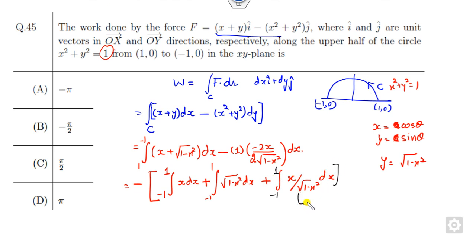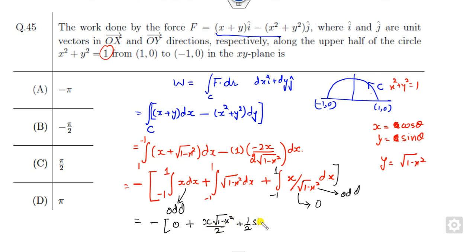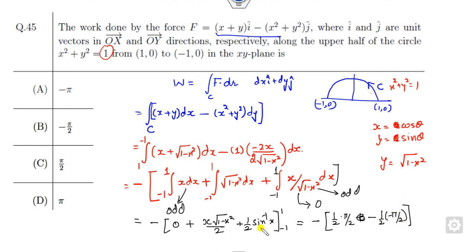Whenever the interval is from -1 to +1, the integral of an odd function goes to zero. So those terms vanish, leaving only the remaining term. Evaluating: [x√(1-x²)/2 + (1/2)sin⁻¹x] from -1 to 1. Substituting 1: 0 + π/4, and lower limit -1: 0 - (-π/4), giving π/4 + π/4 = π/2.